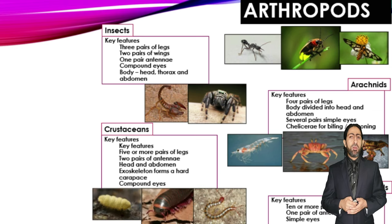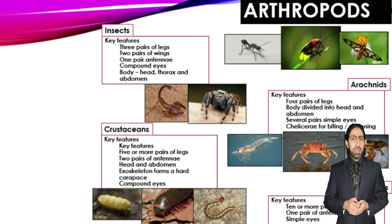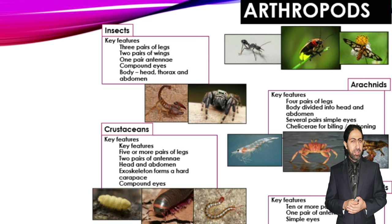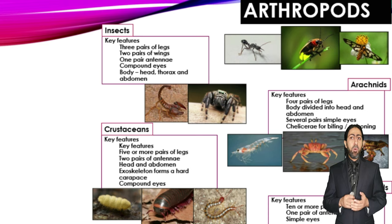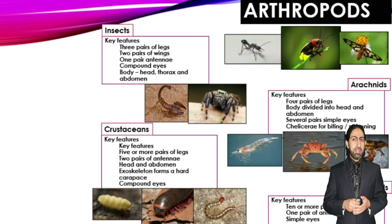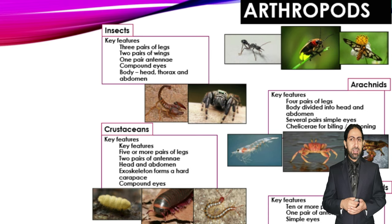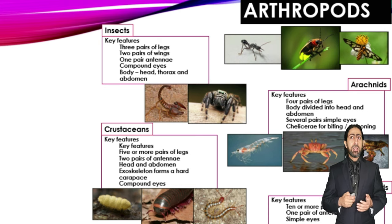Myriapods have ten or more pairs of legs, one pair of antennae, and simple eyes. We will discuss them in further detail, including centipedes and millipedes.